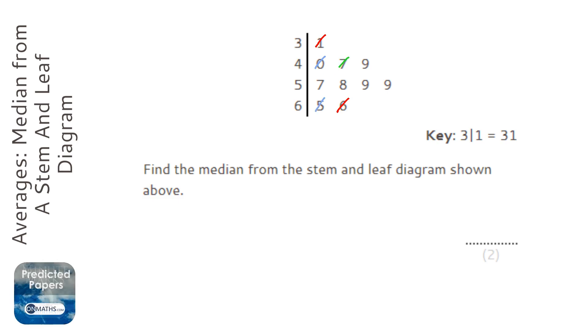I'm just going to keep doing that until I'm left with either one or two in the middle. Now in this case, I'm left with two in the middle, which is the 57 and the 58.